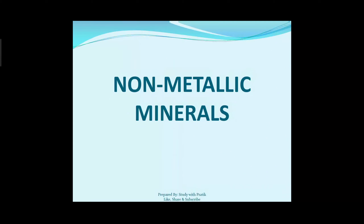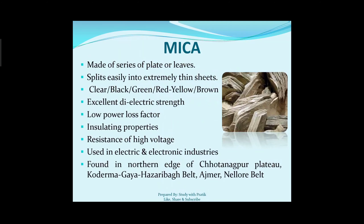Now we come to non-metallic minerals — limestone, mica, gypsum, and mineral fuels are all non-metallic minerals. First, mica: it is made up of a series of plates or leaves that split easily into extremely thin sheets. Mica can be found in clear, black, green, red, yellow, and brown colors. It has excellent dielectric strength, low power loss factor, and insulating properties — it is not a conductor and resists high voltage. Mica is used in electric and electronic industries. It is found in the northern edge of the Chota Nagpur plateau in the Koderma-Gaya-Hazaribagh belt, and also in the Ajmer-Nellore belt.